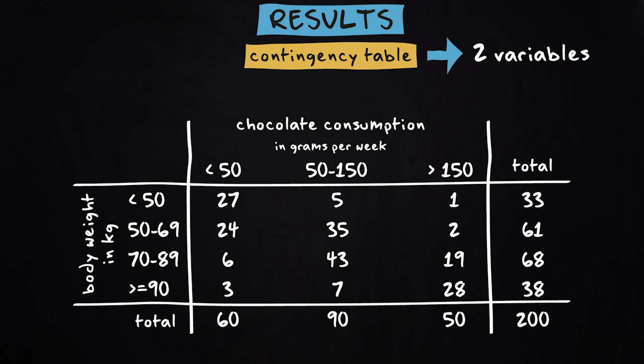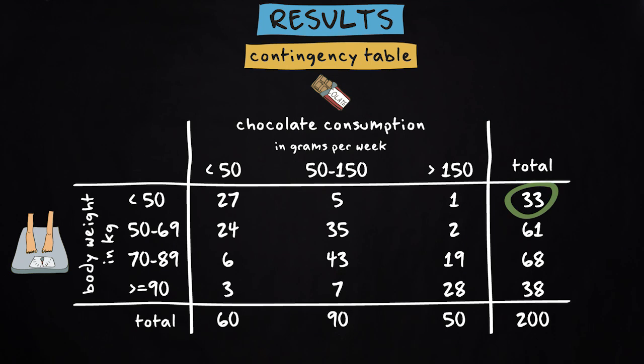In our study we have two variables, body weight and chocolate consumption. The table shows that we have 33 individuals with a body weight of less than 50kg. 27 of them eat less than 50g of chocolate per week. You can also see that 90 individuals eat between 50 and 150g of chocolate per week. Seven of them weigh 90kg or more.